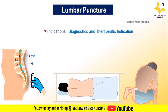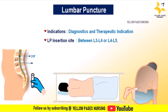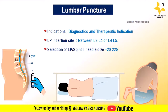The needle is inserted between the lumbar vertebrae, usually between L3-L4 or L4-L5. The spinal needle size commonly ranges between 20 to 22 gauge, and the choice of needle size depends on the patient's age.